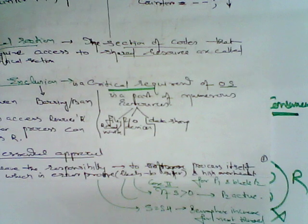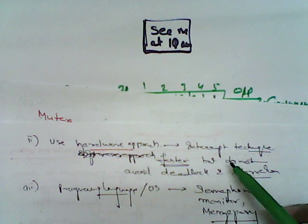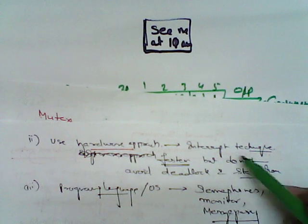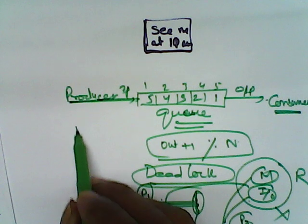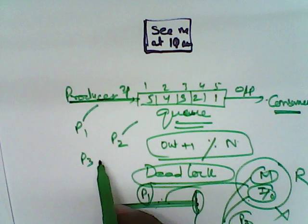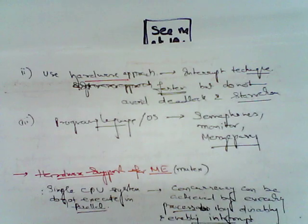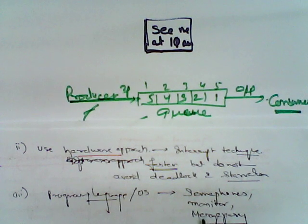The second approach is the hardware approach, which is based on interrupt handling. It is faster but we cannot avoid deadlock or starvation. Starvation means if P1 and P2 are running for a long time, P3 is waiting and will go into a starving condition. The third method is the programming language approach, in which we use semaphore, monitor, and message passing techniques to solve concurrency problems. This is what is used in the case of mutual exclusion.